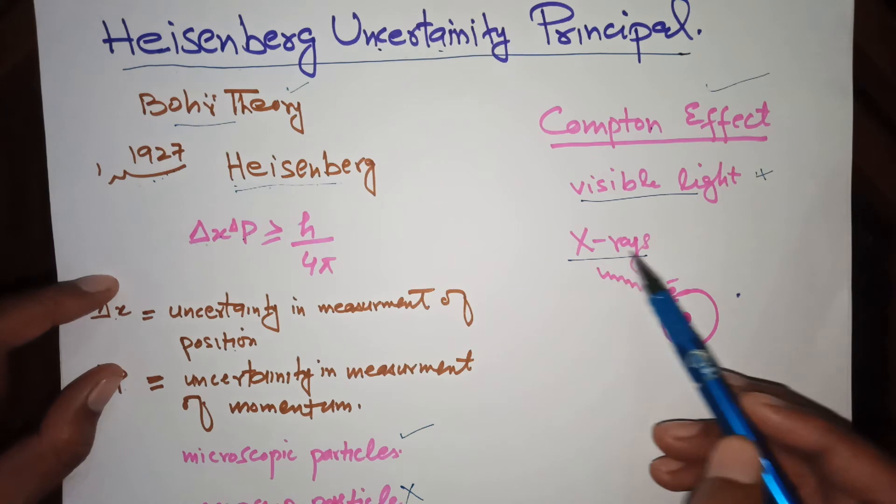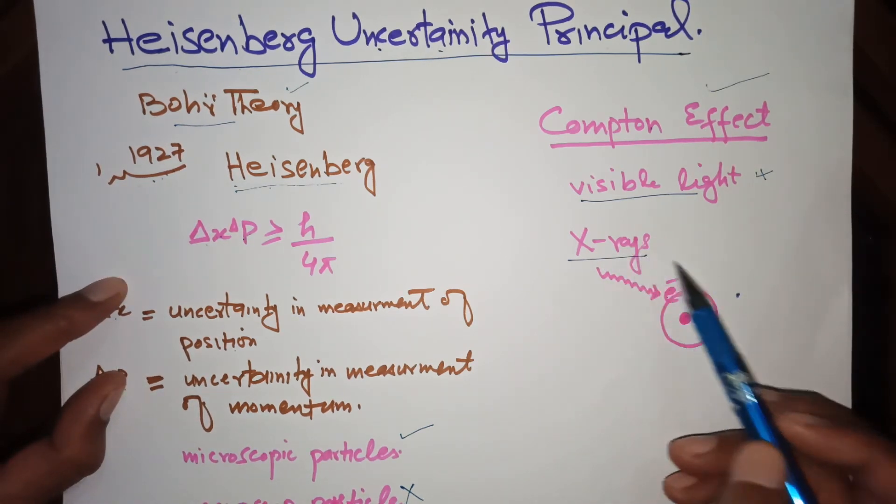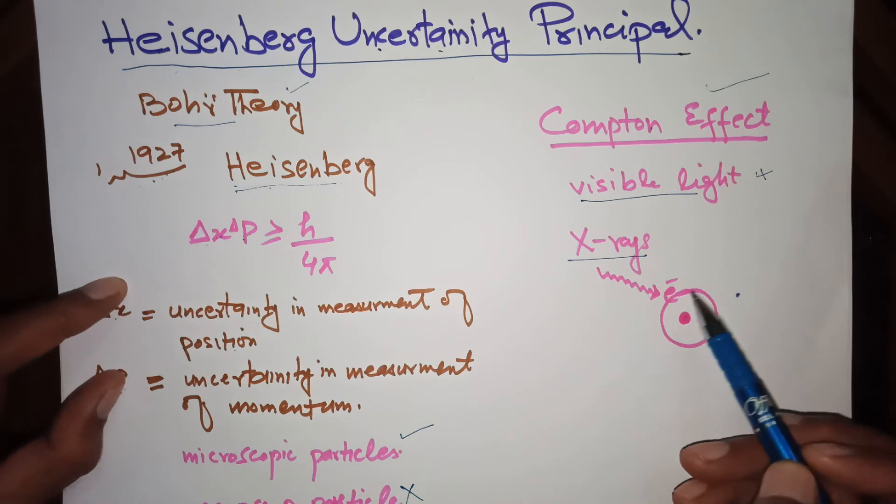So instead, we will use X-rays, because X-rays have wavelength comparable to the diameter of electron.